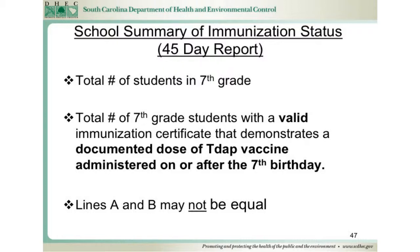The next section is to be completed by all schools that have students enrolled in 7th grade. With the Tdap requirement for 7th graders going into effect this school year, 2013-2014, DHEC would like to assess compliance with this requirement. On line A, enter the number of students enrolled in 7th grade. On line B, enter the total number of 7th grade students with a valid immunization certificate that demonstrates a documented dose of Tdap vaccine administered on or after the 7th birthday. Lines A and B may not be equal.